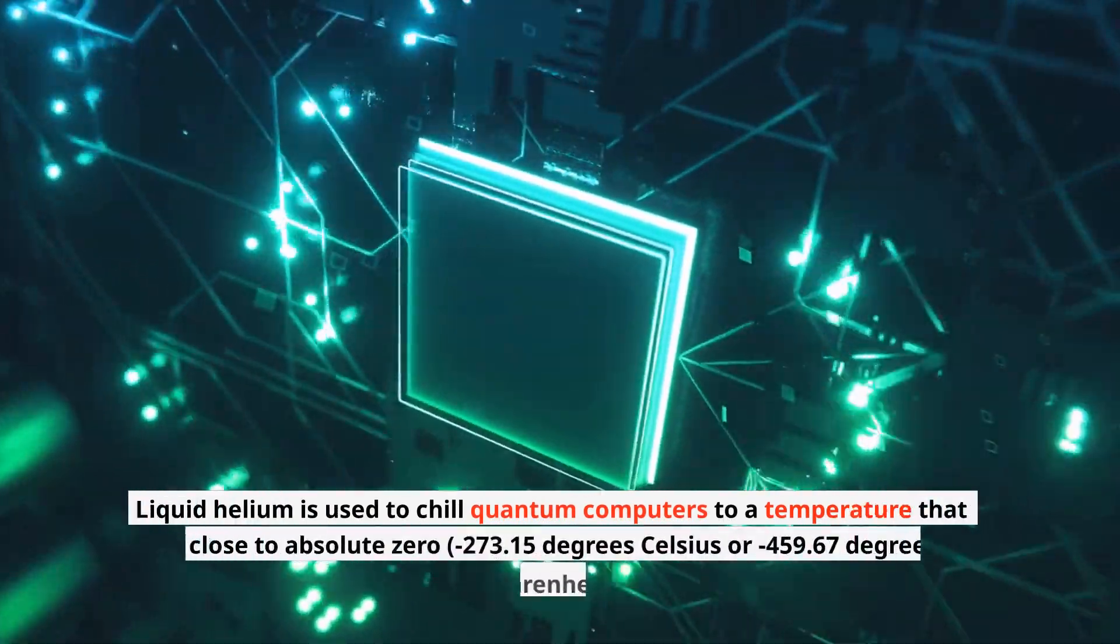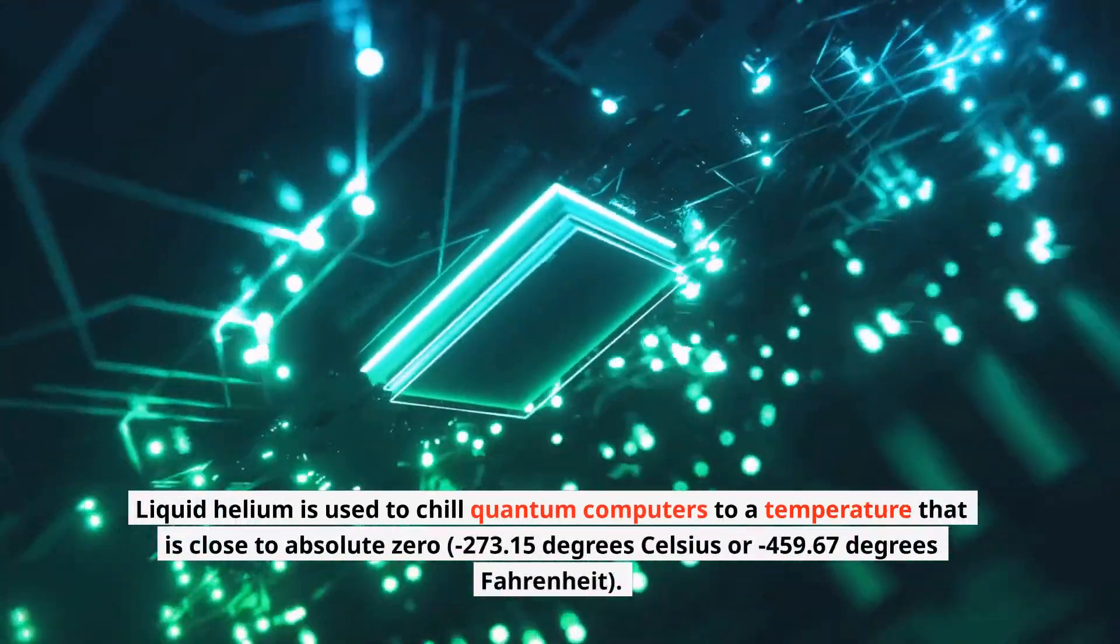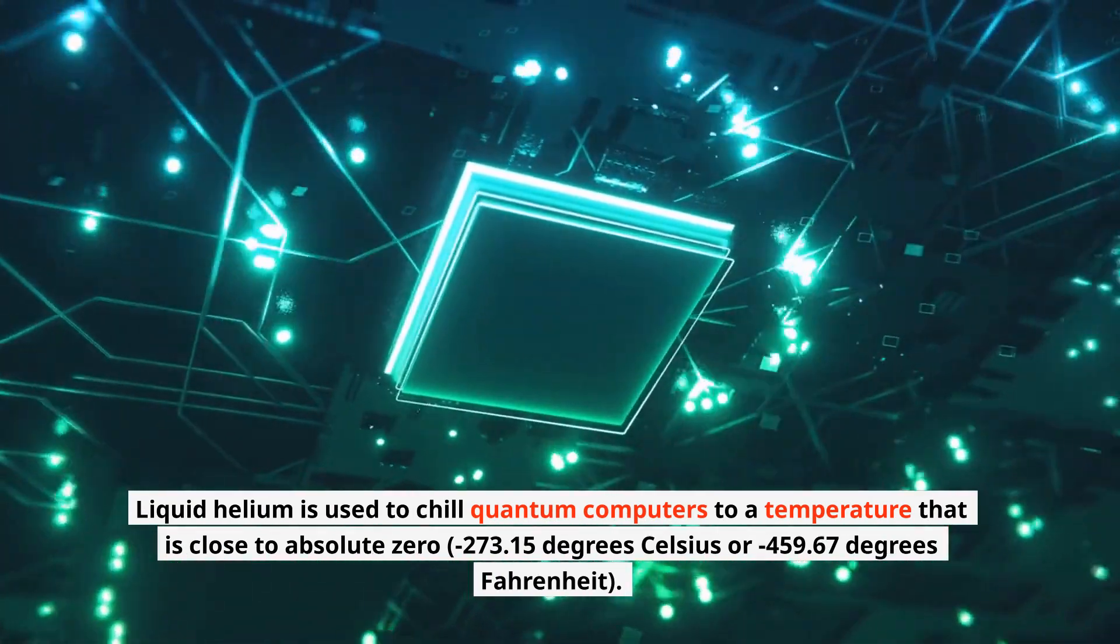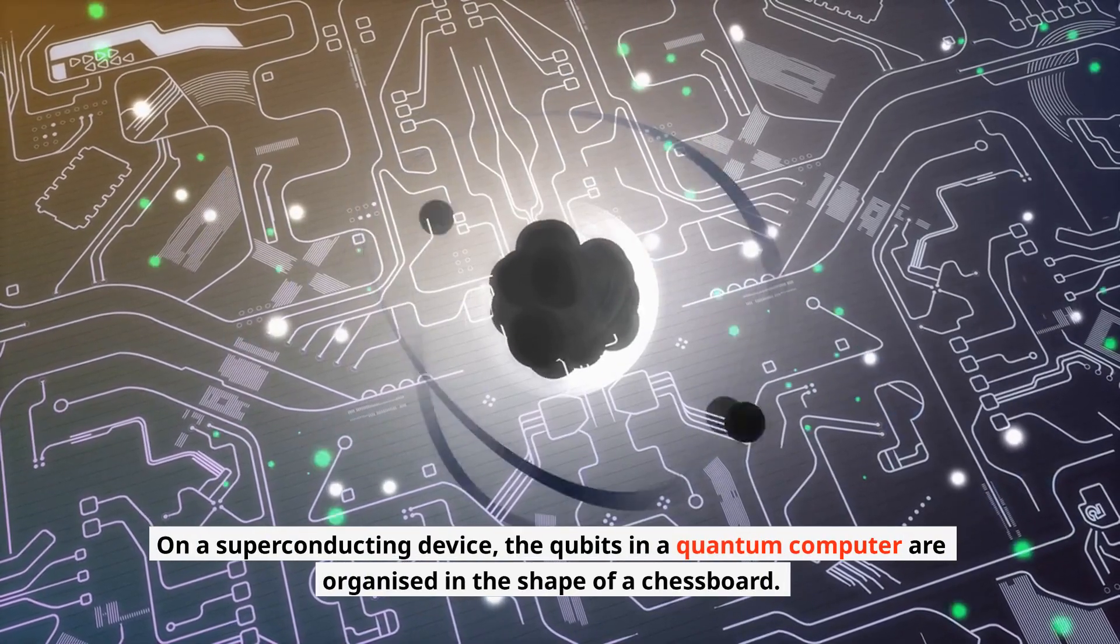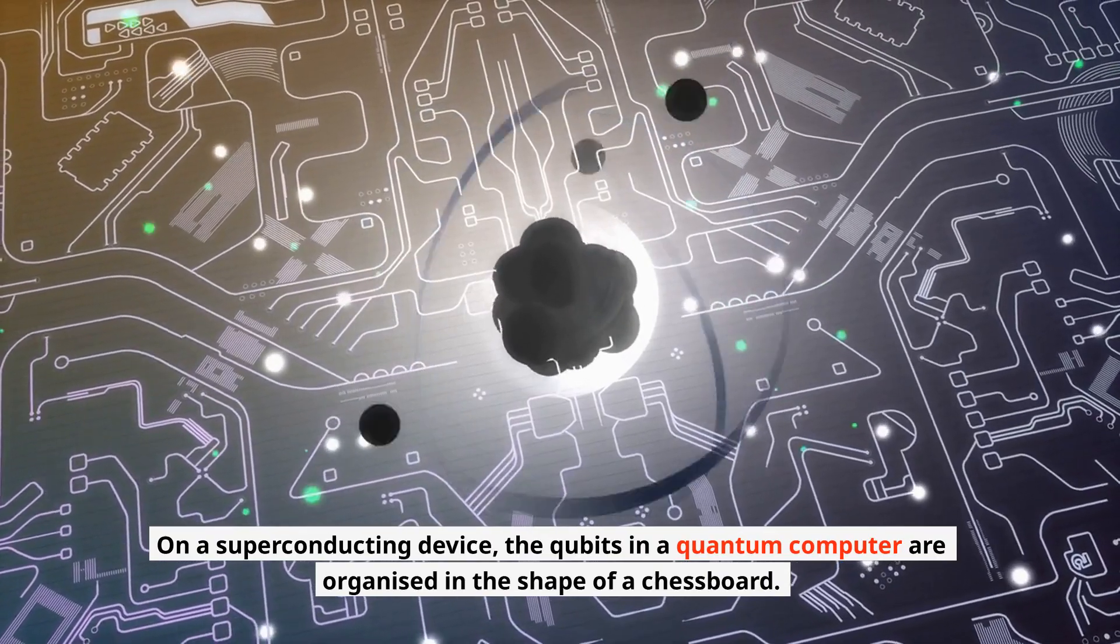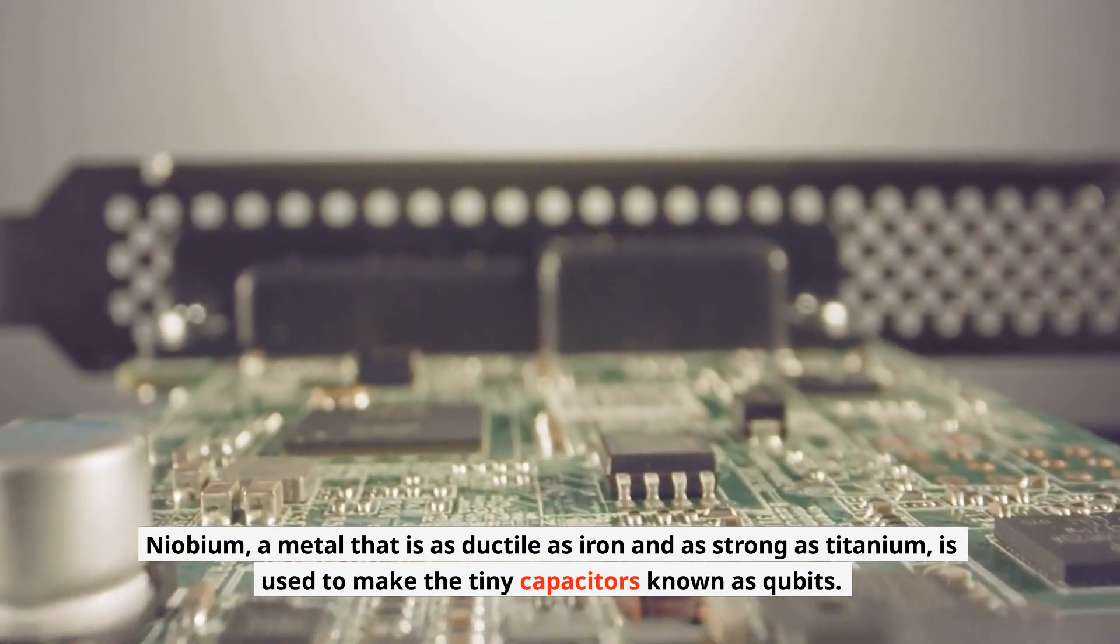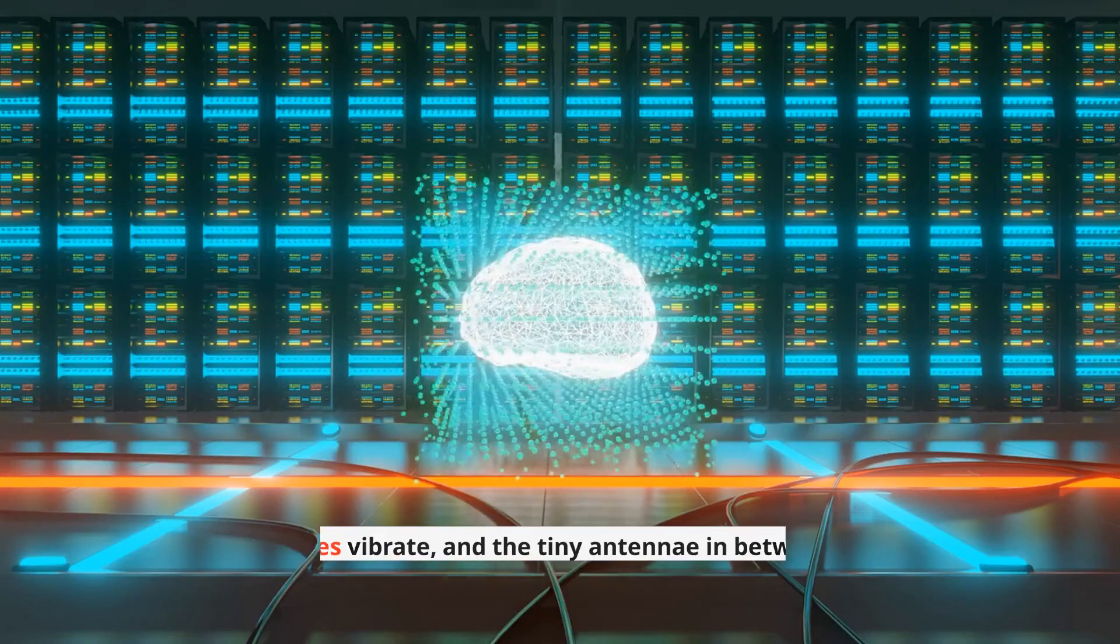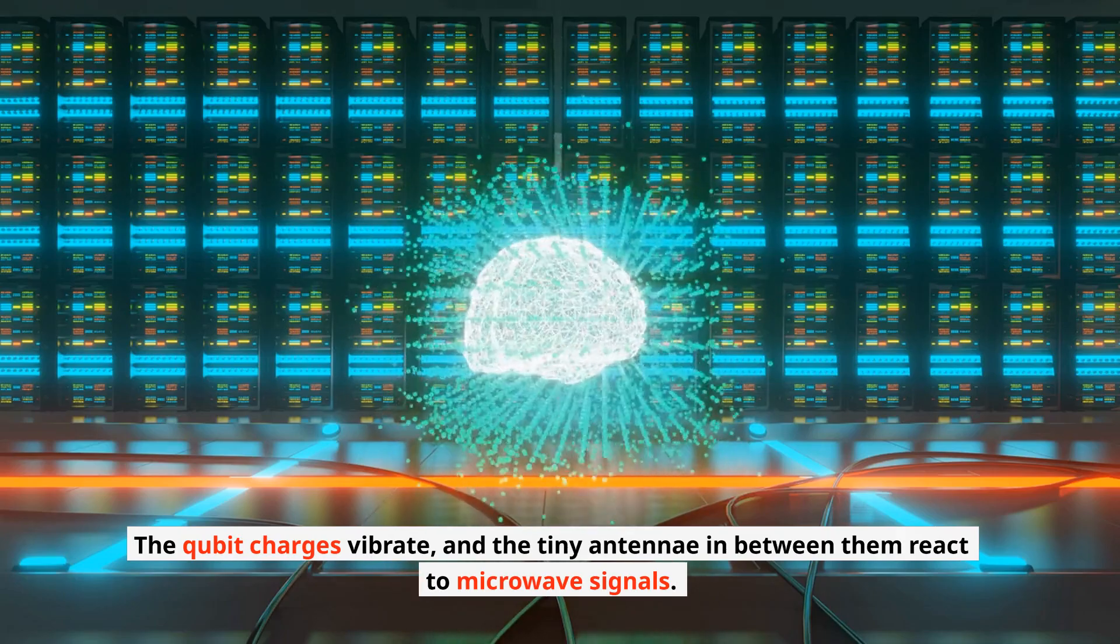Liquid helium is used to chill quantum computers to a temperature that is close to absolute zero, minus 273.15 degrees Celsius or minus 459.67 degrees Fahrenheit. On a superconducting device, the qubits in a quantum computer are organized in the shape of a chessboard. Niobium, a metal that is as ductile as iron and as strong as titanium, is used to make the tiny capacitors known as qubits. The qubit charges vibrate, and the tiny antennae in between them react to microwave signals.